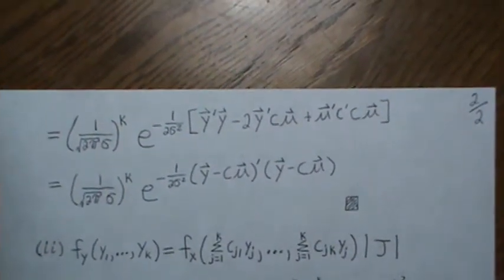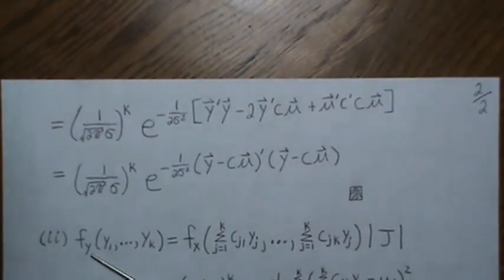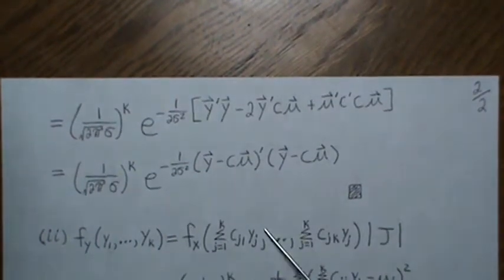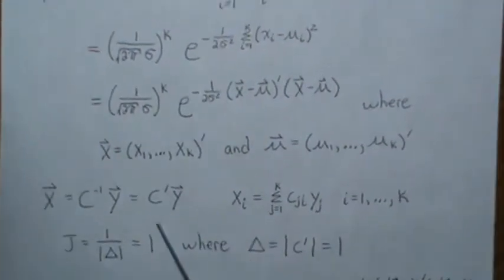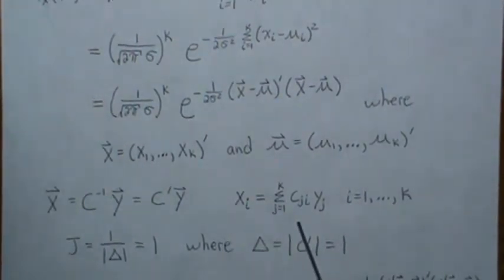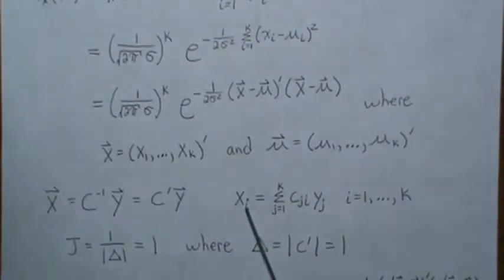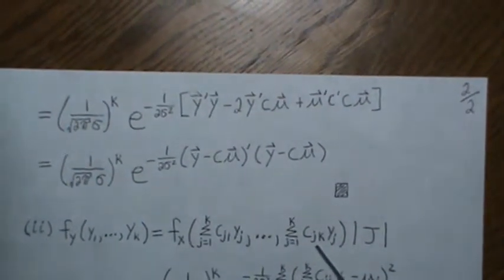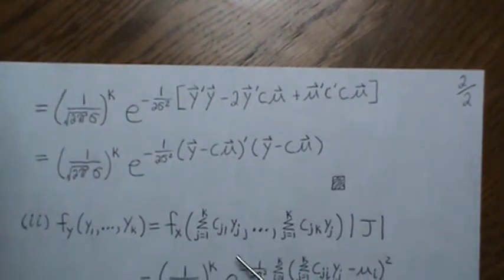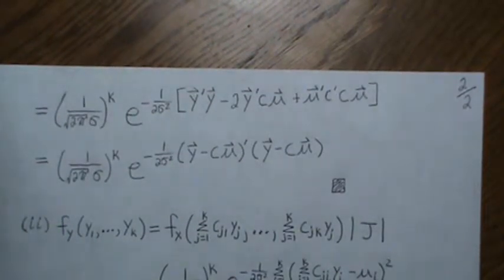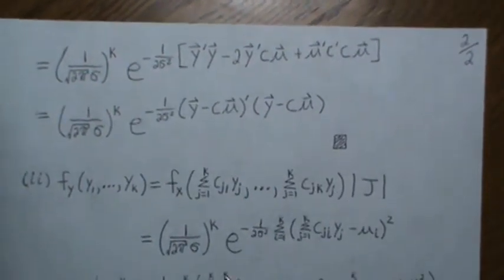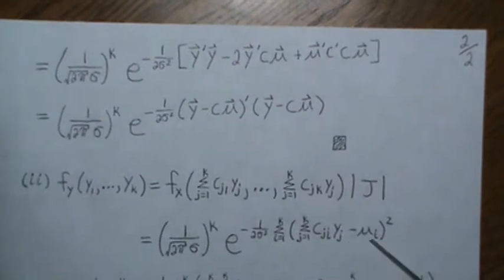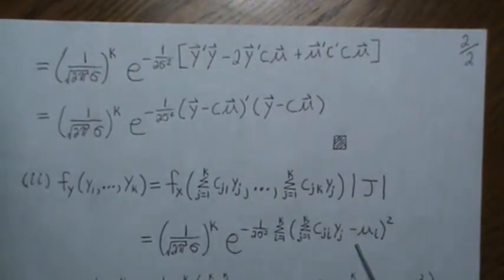Now let's redo this in scalar notation, which is more cumbersome. We plug in the back-solved expressions for X — each X_i equals the sum over J of C_ji times Y_j — into the product of normal densities, with Jacobian equal to 1. Multiplying out the squared terms and summing over i, we expand and distribute the index i across all terms.